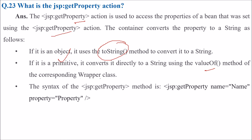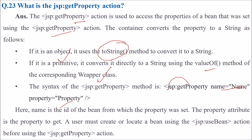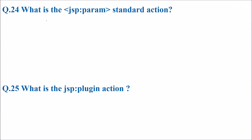The syntax of JSP getProperty is: jsp:getProperty name and property attributes. The name is the id of the bean from which the property was set, and the property attribute is the property to get. The user must create or locate a bean using JSP useBean before using the JSP getProperty action.